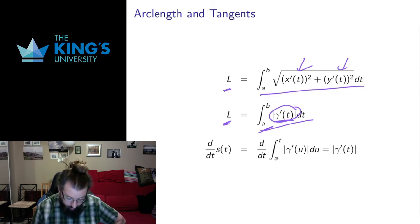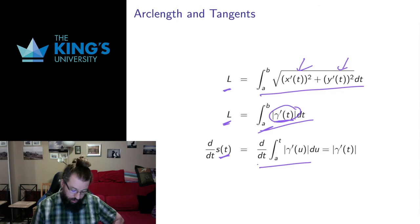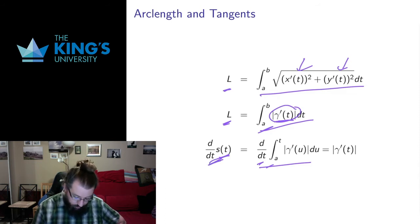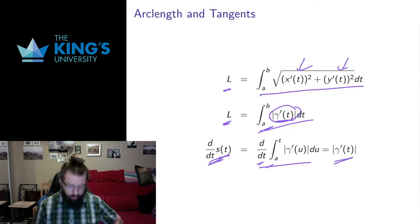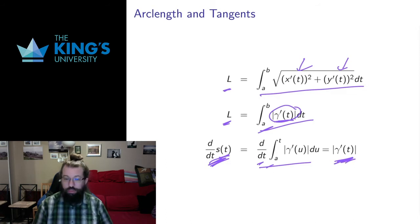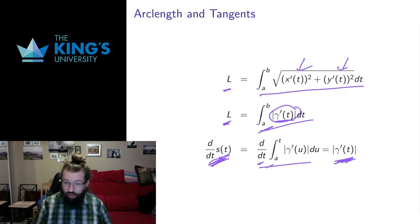If we look at the arc length function and differentiate it, then we get the derivative of an integral by the fundamental theorem of calculus. So the derivative of the arc length function is in fact the speed. The arc length function is how much distance you're picking up as you go along in terms of time. That's exactly what speed is. It makes sense that the derivative of the arc length — derivative of length, derivative of position — should be speed.